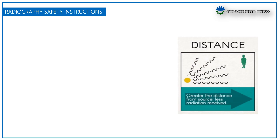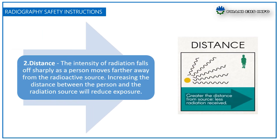The second principle is distance. The intensity of the radiation falls off sharply as a person moves further away from the radioactive source. Increasing the distance between the person and the radiation source will reduce the exposure, which means the greater the distance from the source, the less the radiation received.